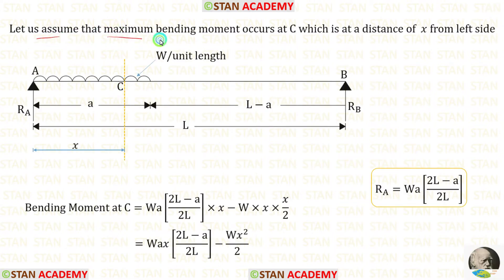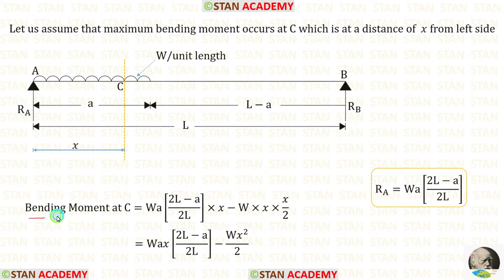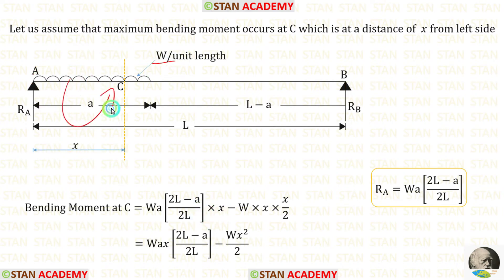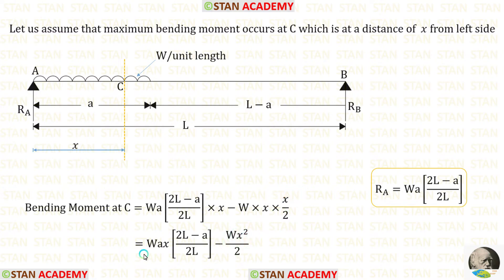Let us assume the maximum bending moment occurs at C, which is at a distance of X from the left support. Let us find the bending moment at C. RA is acting in the clockwise direction, so it will be positive and the distance is X, giving RA into X. The UDL is acting in the anti-clockwise direction, so it will be negative. For the UDL, we multiply with the distance and distance by 2. Here the distance is X, so X into X by 2, giving X squared upon 2. This is the expression for the bending moment at C.